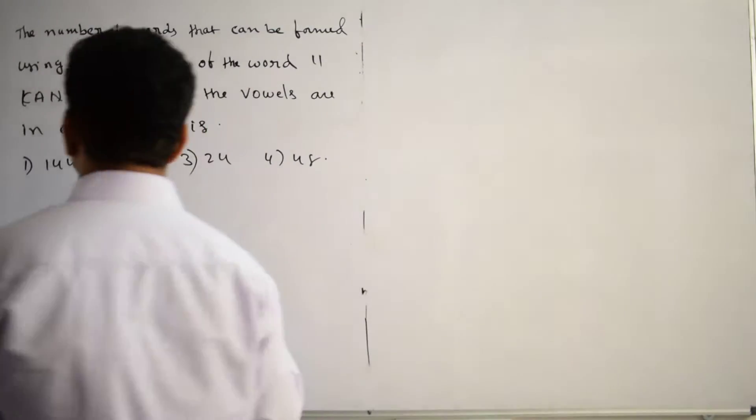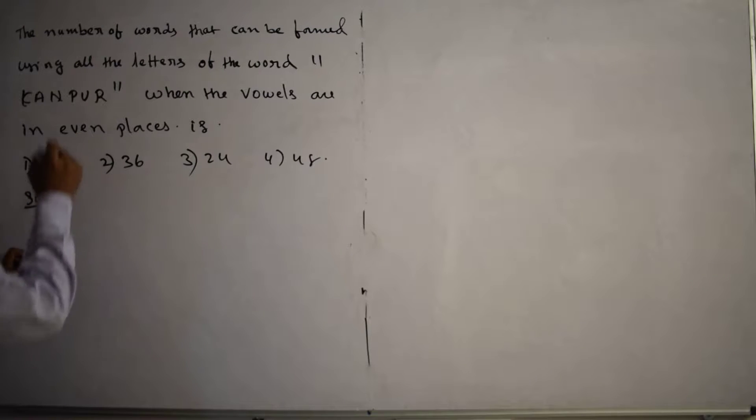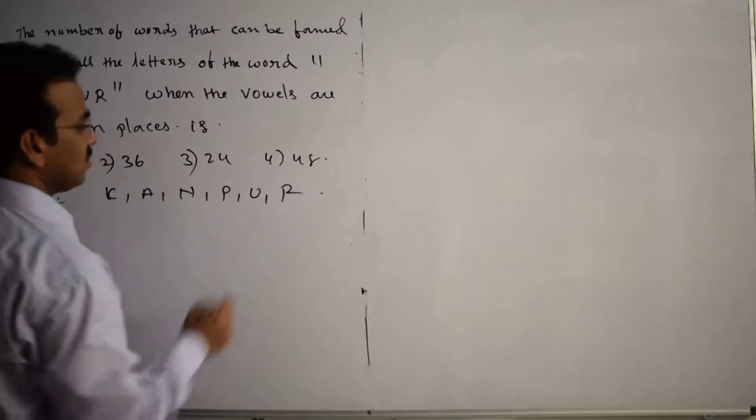So first let me write the given letters in the solution. What are the given letters? Given letters are K, A, N, P, U, R.